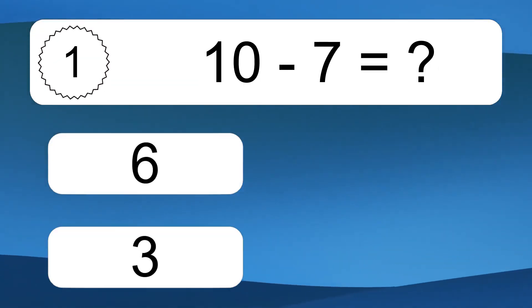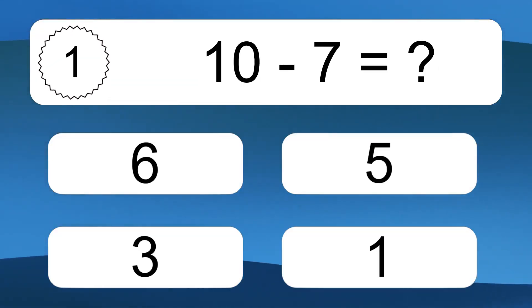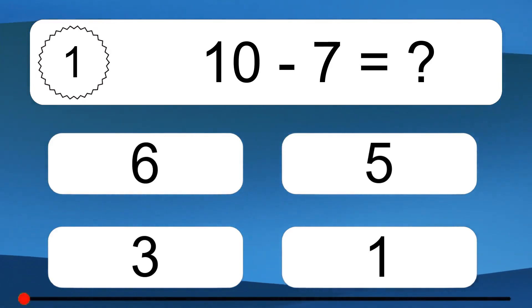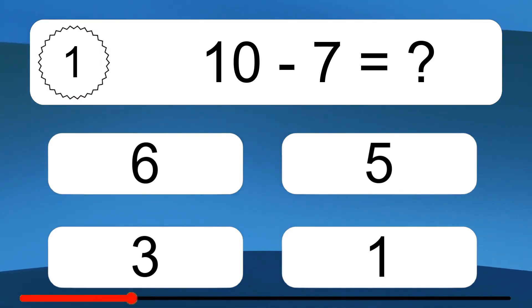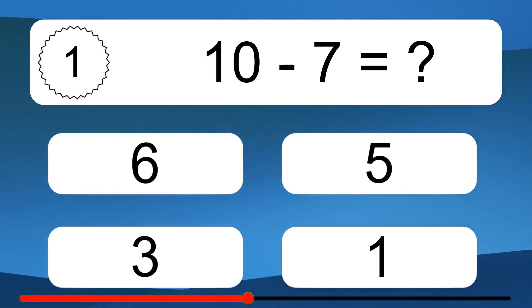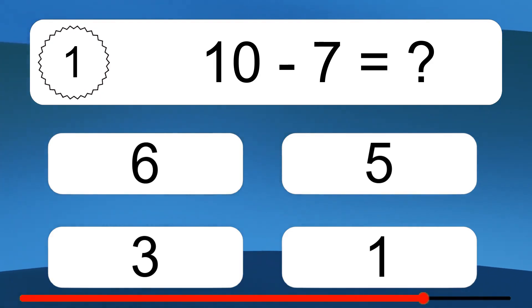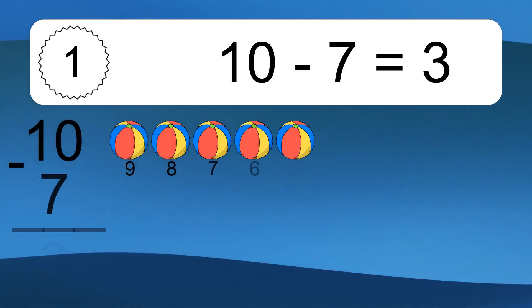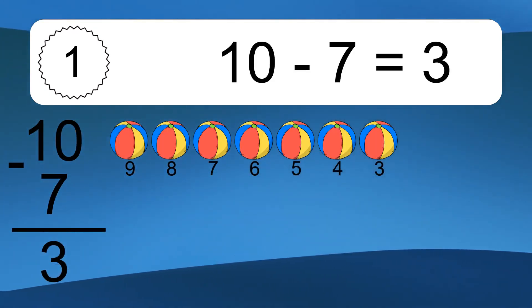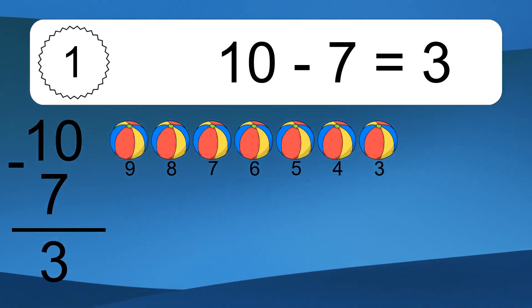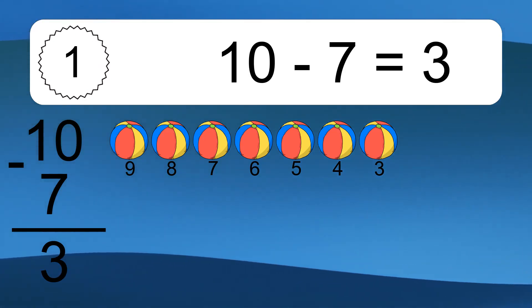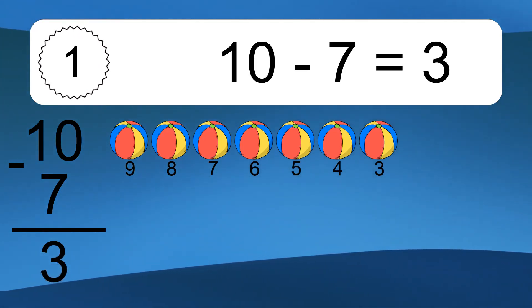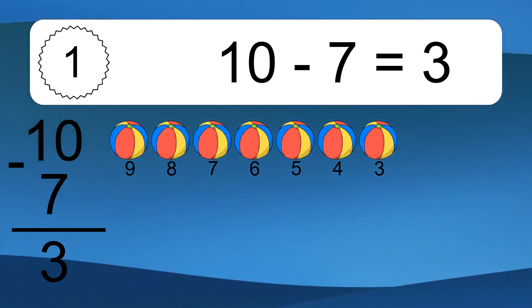10 minus 7 equals what? 10 minus 7 equals 3. Let's count it: 9, 8, 7, 6, 5, 4, 3.